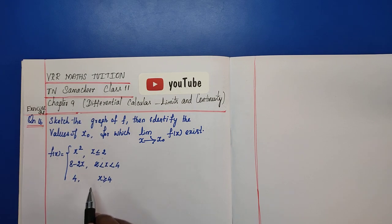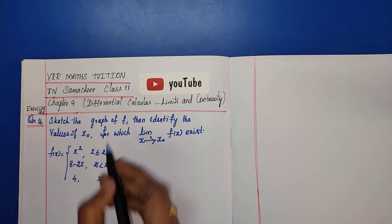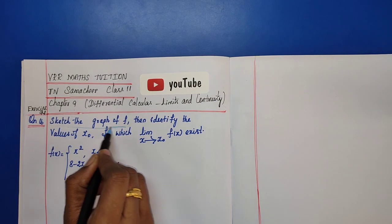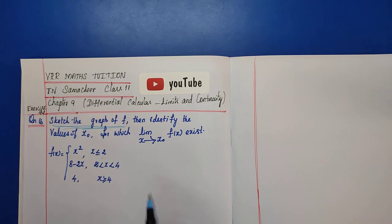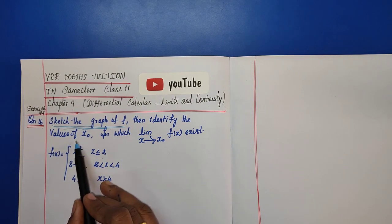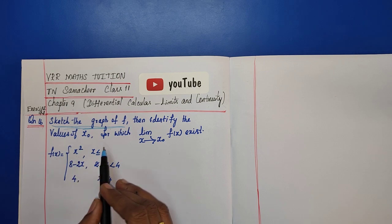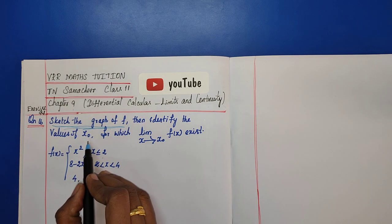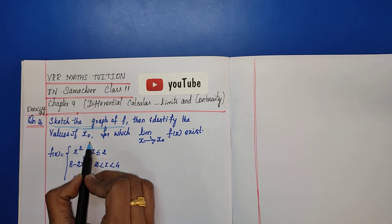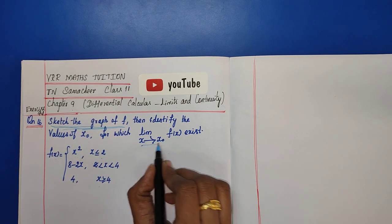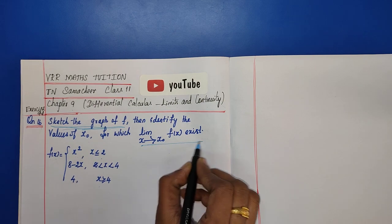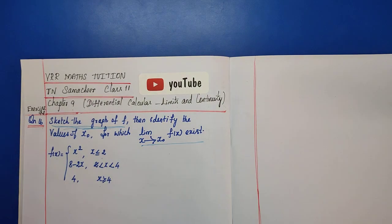For this question, first we sketch the graph of f, and then we identify the values of x₀ for which the limit exists. After identifying those points, we draw the graph first.